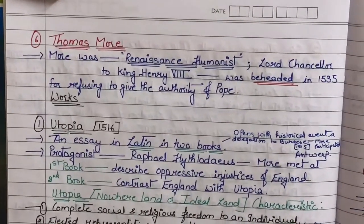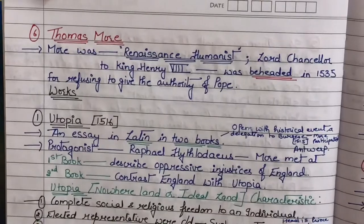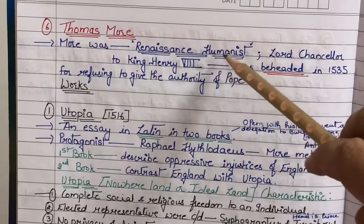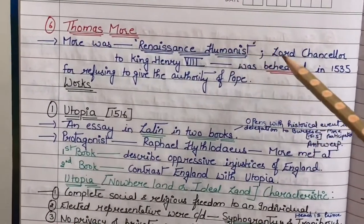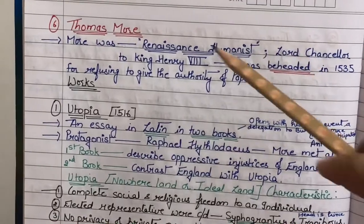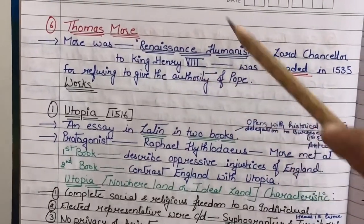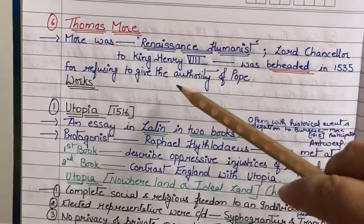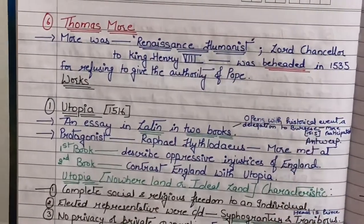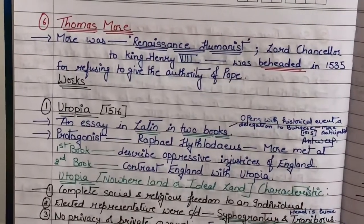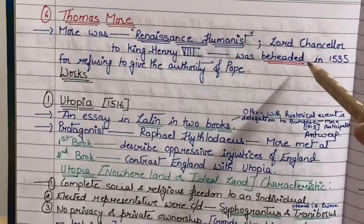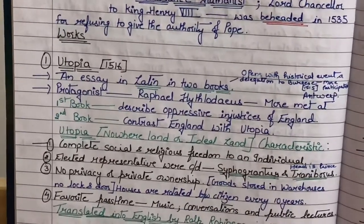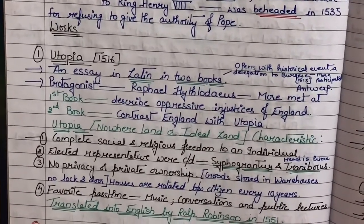Now let's talk about Thomas Murray. Thomas Murray was known as a Renaissance Humanist. He was the Lord Chancellor to King Henry VIII and was beheaded in the year 1535 for refusing to give authority to the Pope. He refused to grant authority to the Pope, and so he was beheaded in 1535.